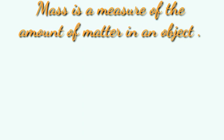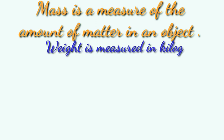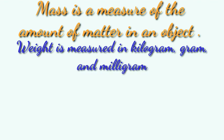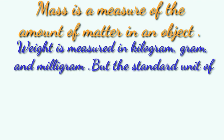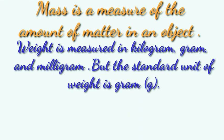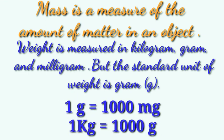Next, we will talk about weight or mass. Mass is the measure of the amount of matter in an object. Weight is measured in kilograms, grams, and milligrams. The smallest unit is milligram and the biggest unit is kilogram, but the standard unit of weight is gram, represented by small 'g'. 1 gram equals 1000 milligrams and 1 kilogram equals 1000 grams.